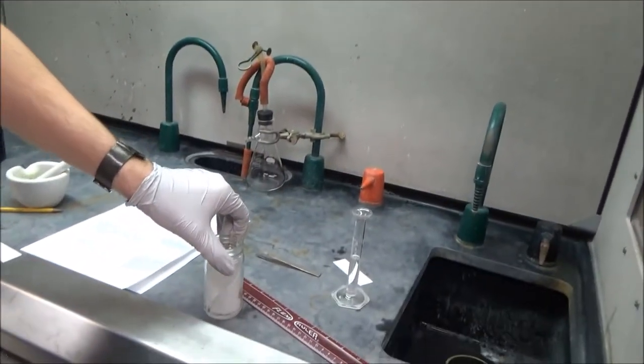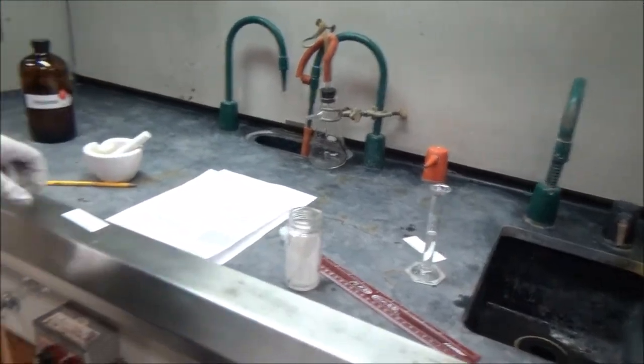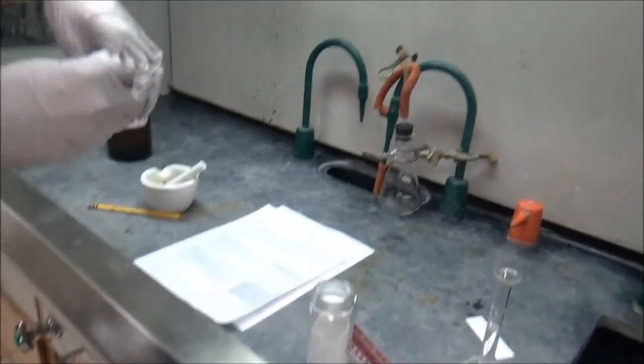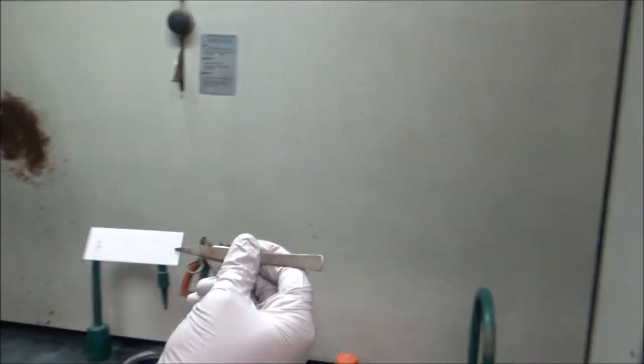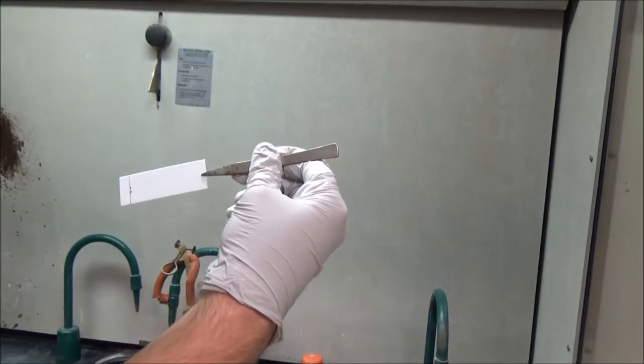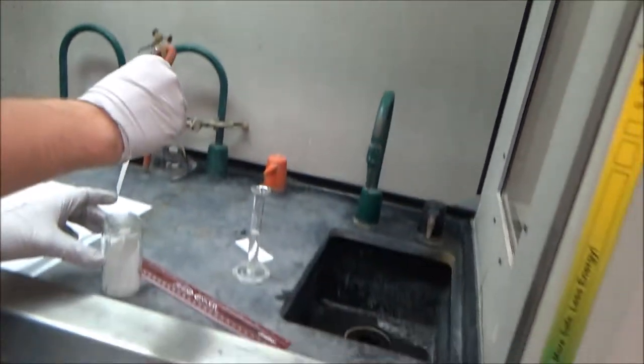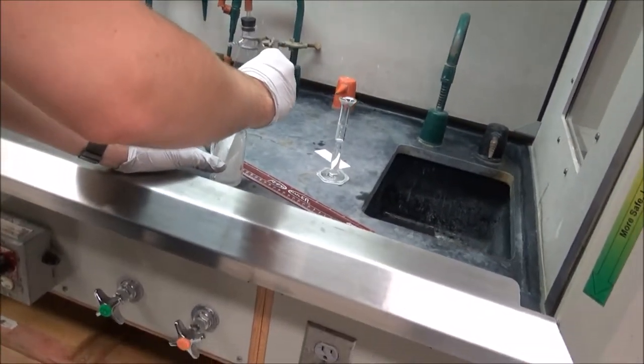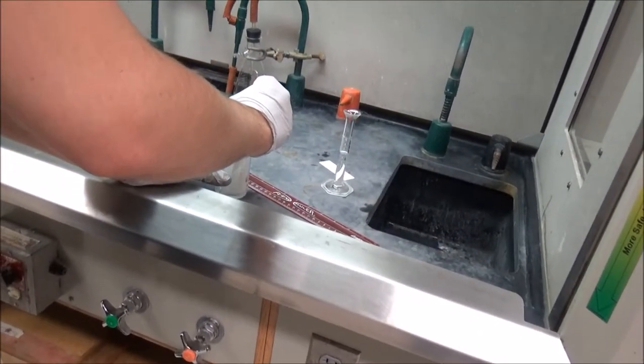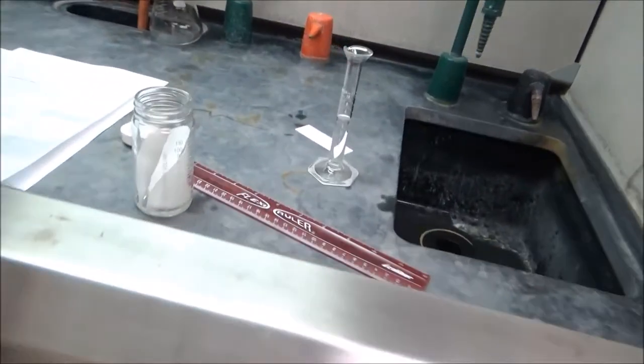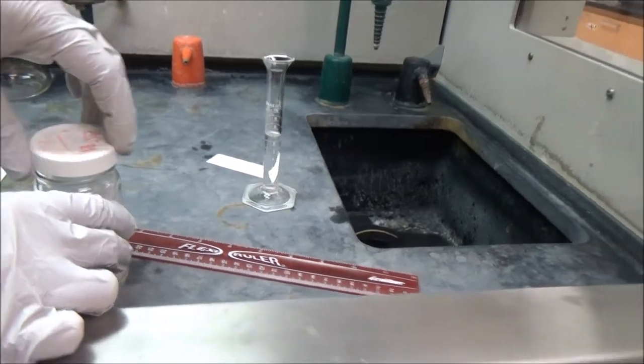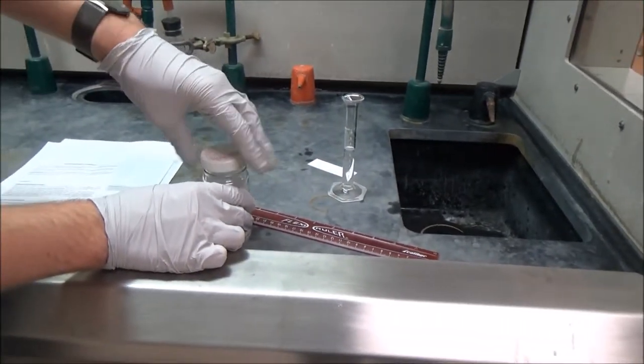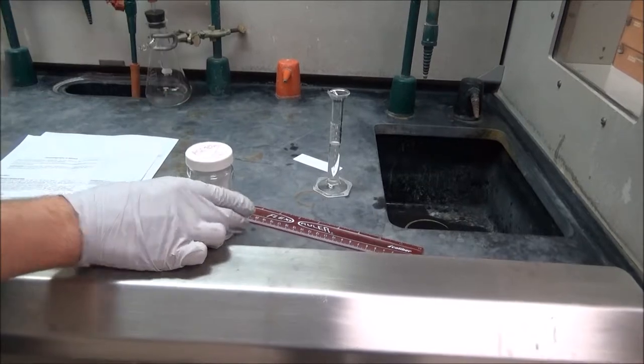Now that that's prepared, I'm ready to immerse my TLC plate in the solvent. I'm going to take this pair of forceps, hold the TLC plate by the top of it, and place it in the solution carefully. Then lean it against the side of the TLC chamber. Then I'm going to put the lid on and let that develop.